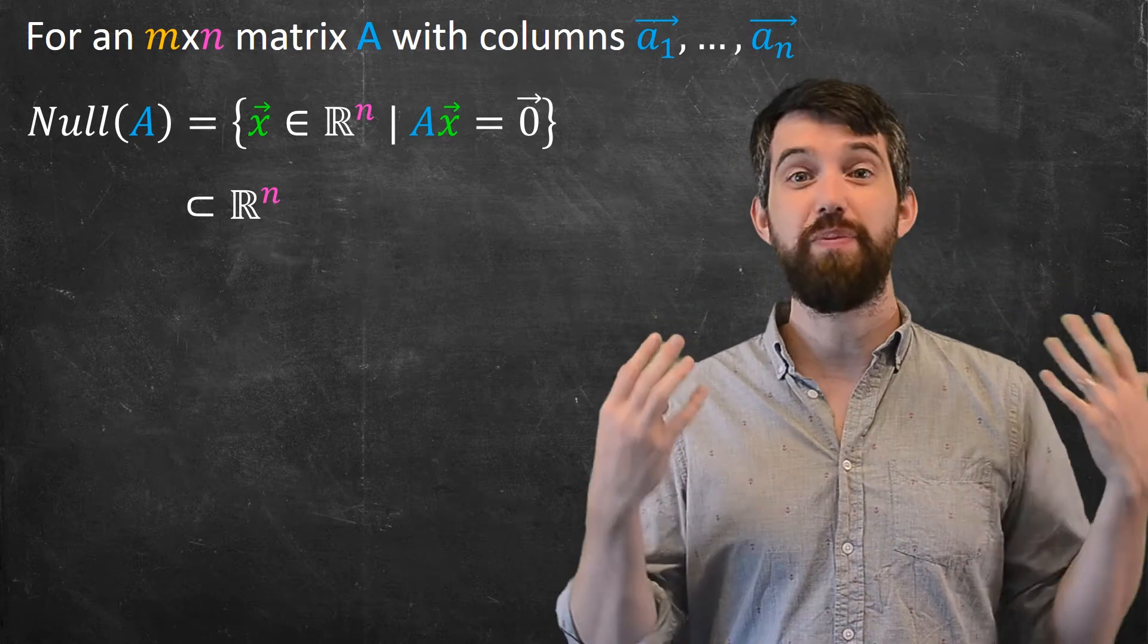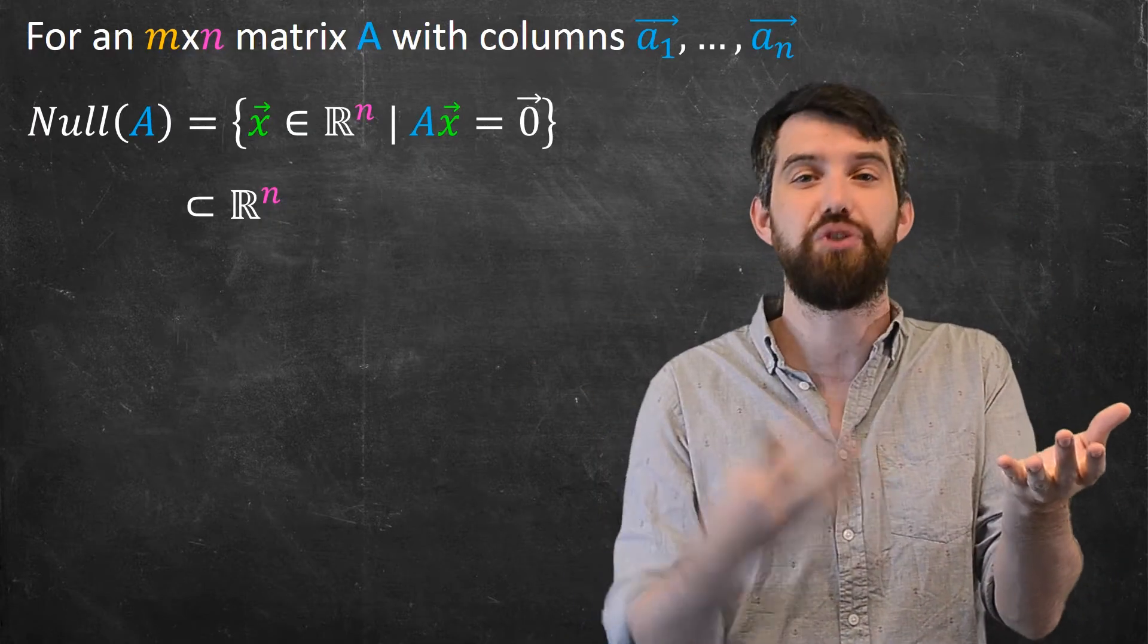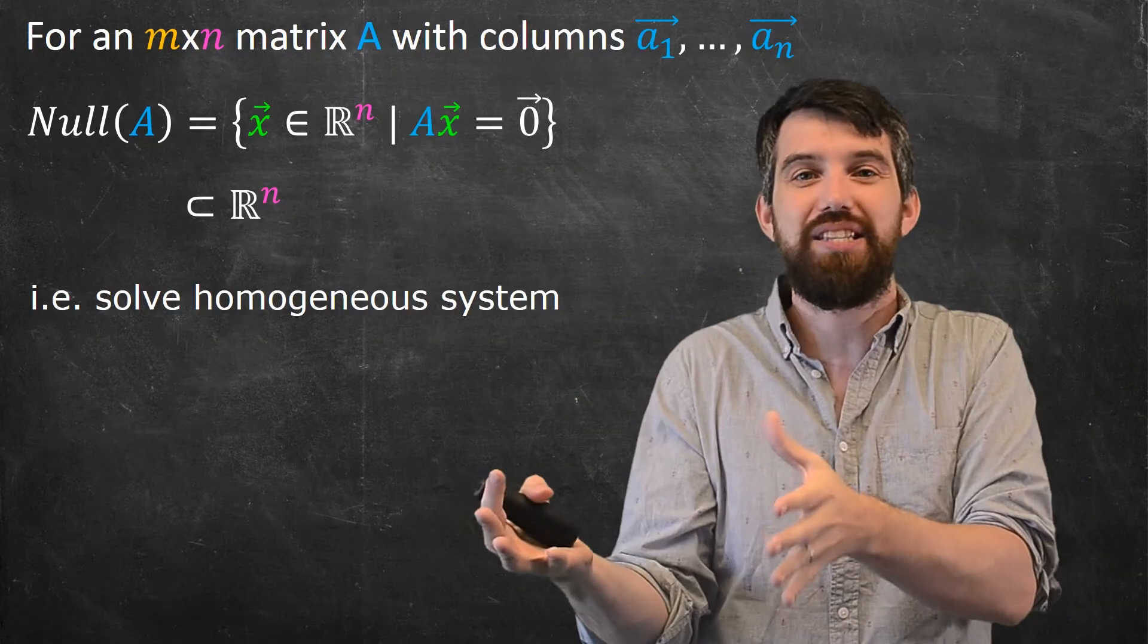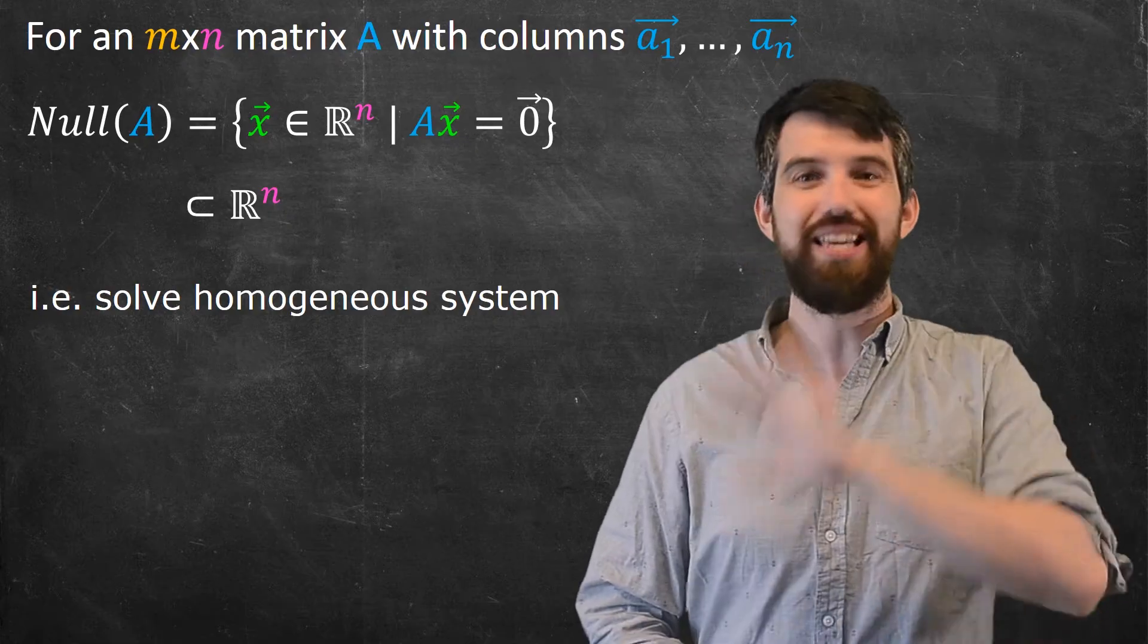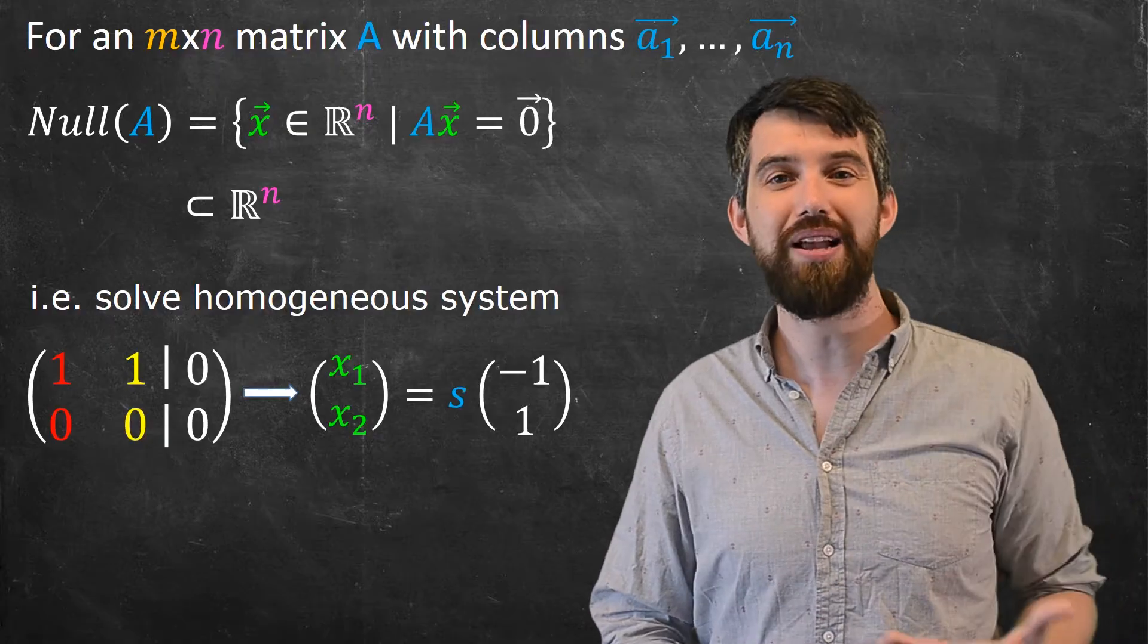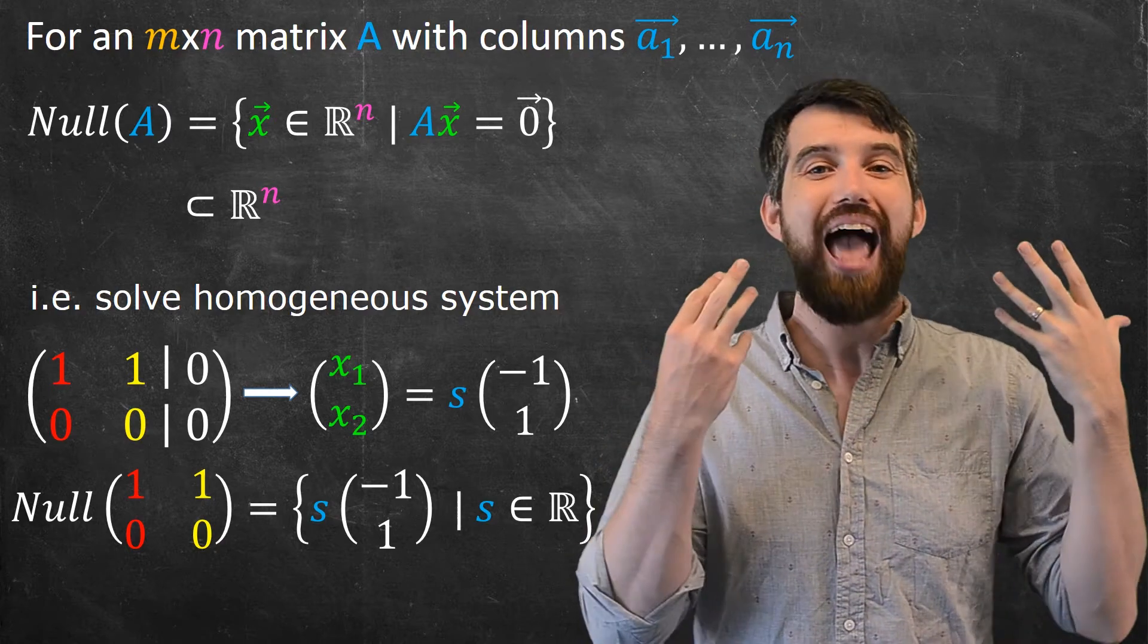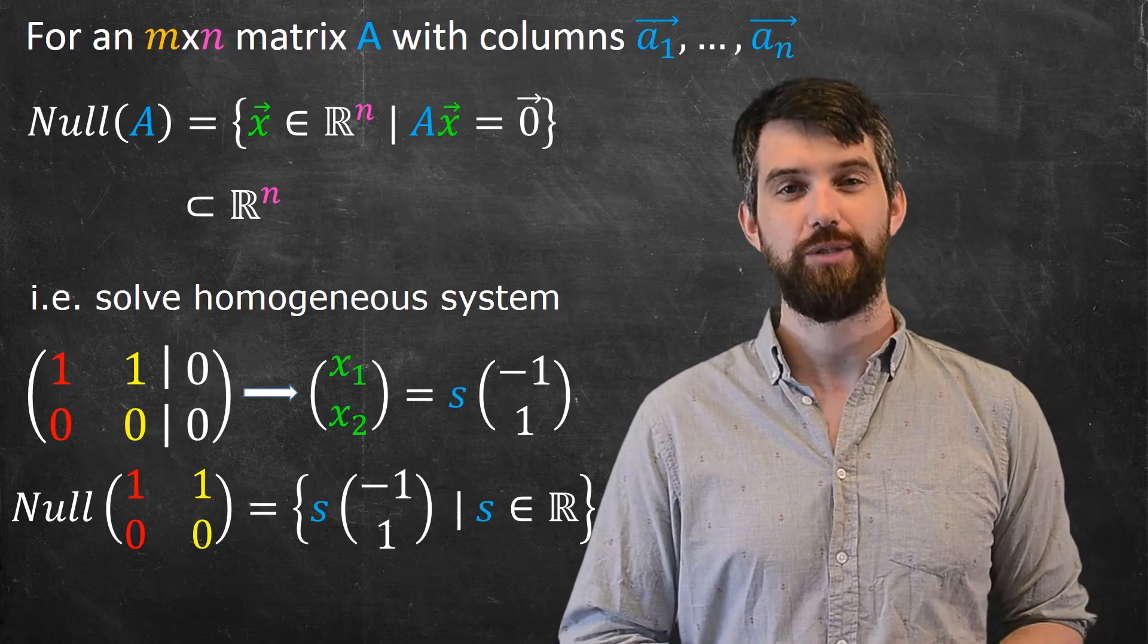Now, for actually computing this, the null space is great. It's actually even better than the column space. In the column space, I can test whether an individual vector was or was not in the column space. But here, I know how to solve Ax equal to 0. This is a homogeneous system. We've done it many times. So I just solve Ax equal to 0, and that's going to tell me all of the vectors that are in my null space. So like the example we just did, we wrote out the homogeneous system, we solved it, and then how do I write this? I say the null space is just going to be equal to the set of all of these multiples. All of these s parameter multiplied by the (-1, 1). And that's how I'm going to write down my null space.